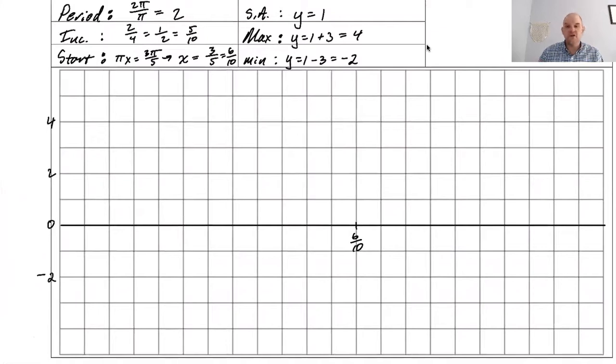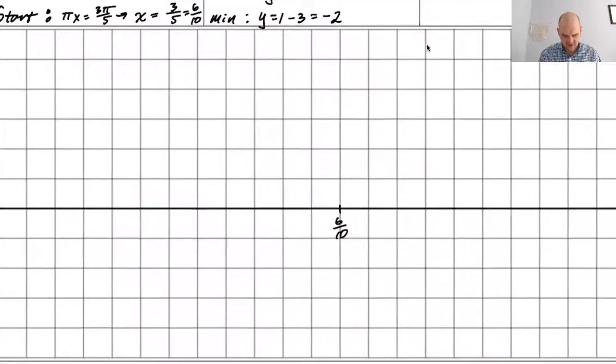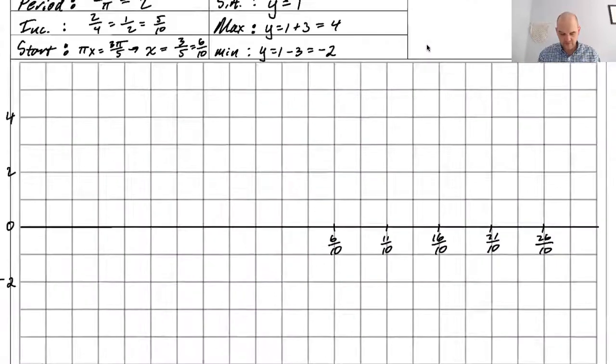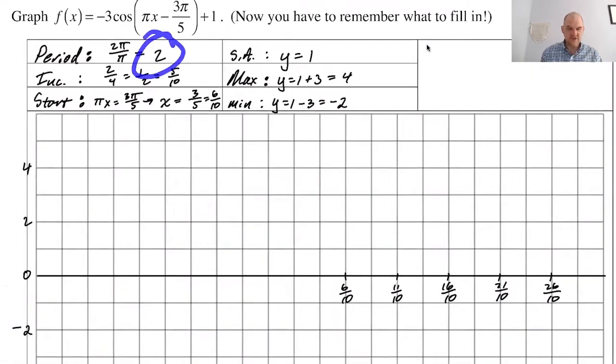And then start goes in the middle. So I'm going to say here, 6 tenths. And then we add, we go two boxes per increment. So this will be 11 tenths. And then we just keep adding five. So 16 tenths, 21 tenths, 26 tenths. So I've gone one, two, three, four increments. So that should be one period. 26 minus six is 20 over 10 is two. And we got that the period was two. So we got it.